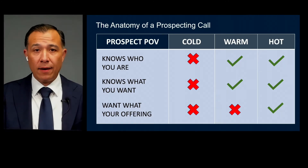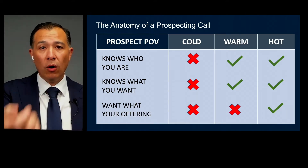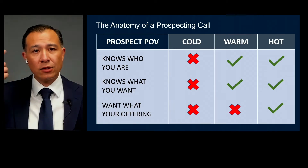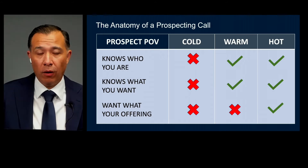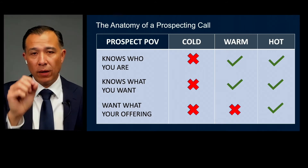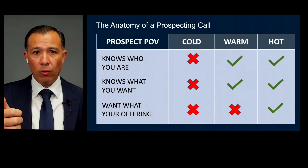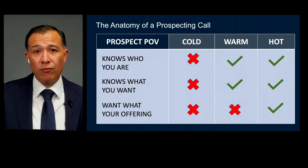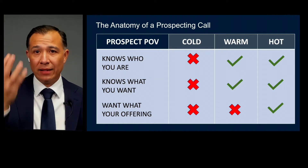When a random number comes up, the next question is: what do they want — what's the purpose of their call? And then after that: what are they offering? On a cold call, they don't know who you are, they don't know what you want, and because of that they don't know what you're offering — they don't know if they need or want what you're offering. That's a cold call.